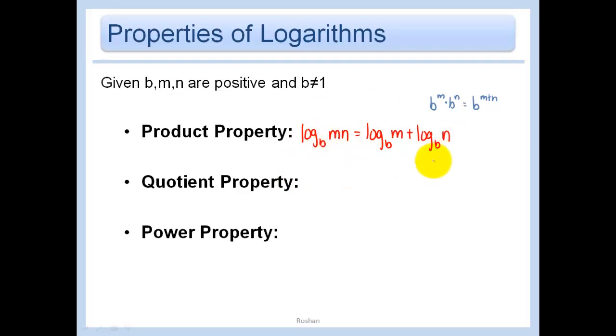Similarly in the next one remember that b to the m over b to the n was b to the m minus n same basis subtract the exponents. Well our quotient property for logarithms is log base b of m divided by n is equal to log base b of m minus log base b of n.